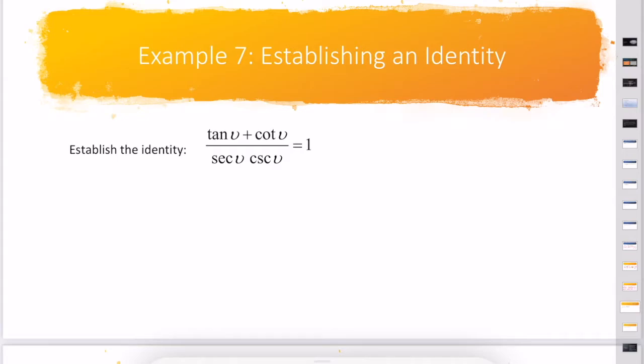I have two more examples for us. Next, I'm going to establish the identity that tan θ plus cot θ over sec θ csc θ equals 1.